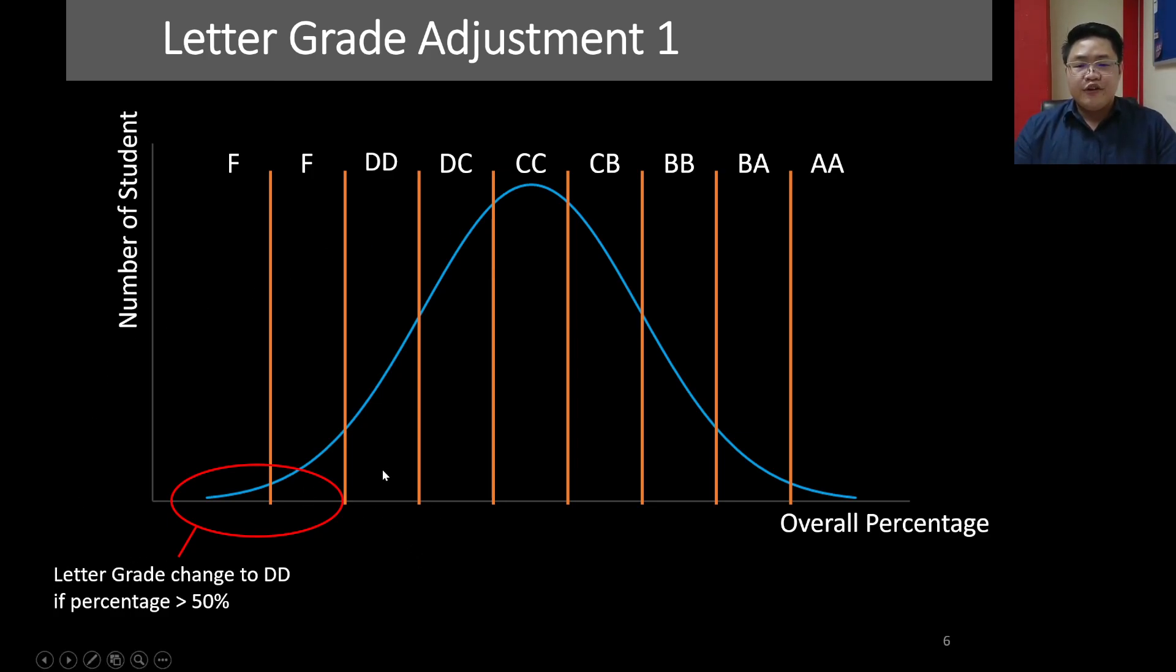For the students who were initially granted letter grade F but their percentage is higher than 50%, the system would automatically change the letter grade from F to DD. And the second one, it's a bit scary. For students whose overall percentage is less than 30%, they will fail the course or they will get letter grade F.